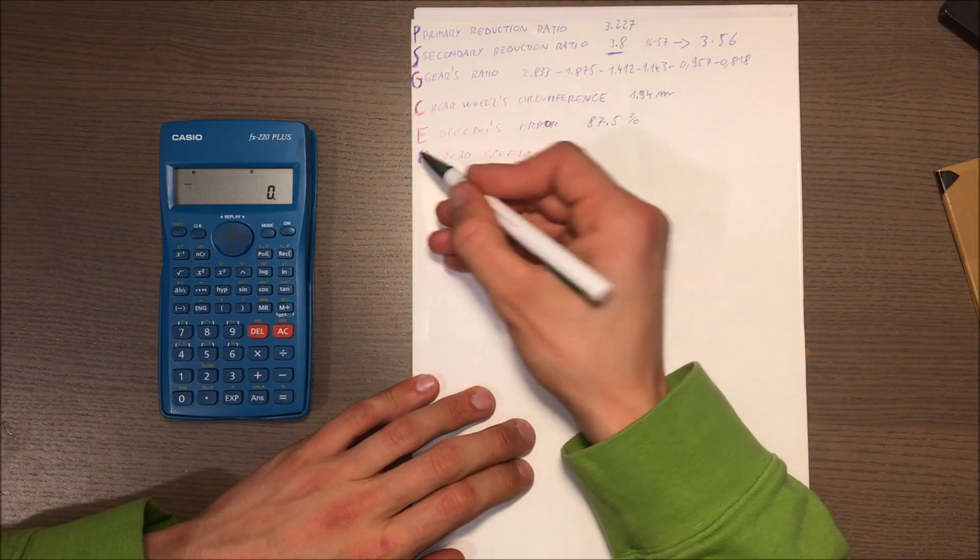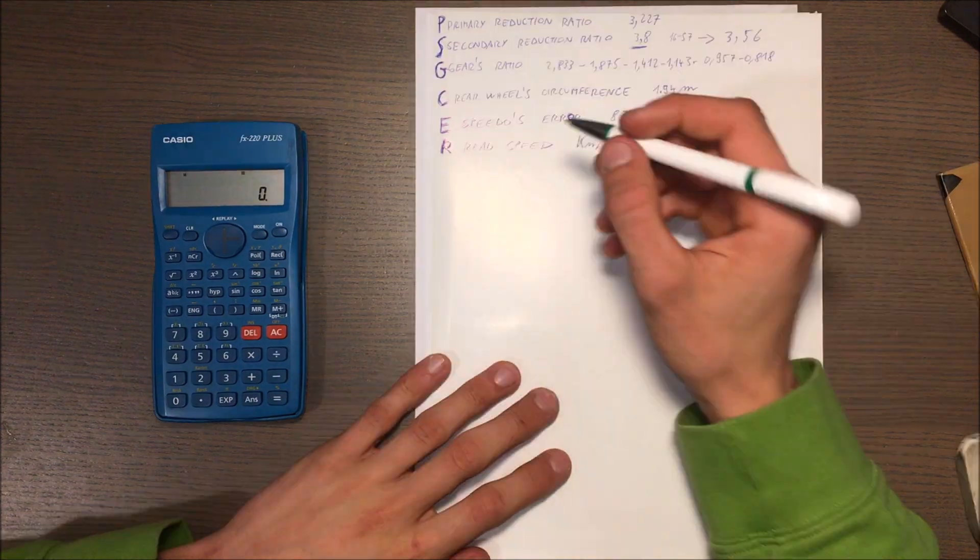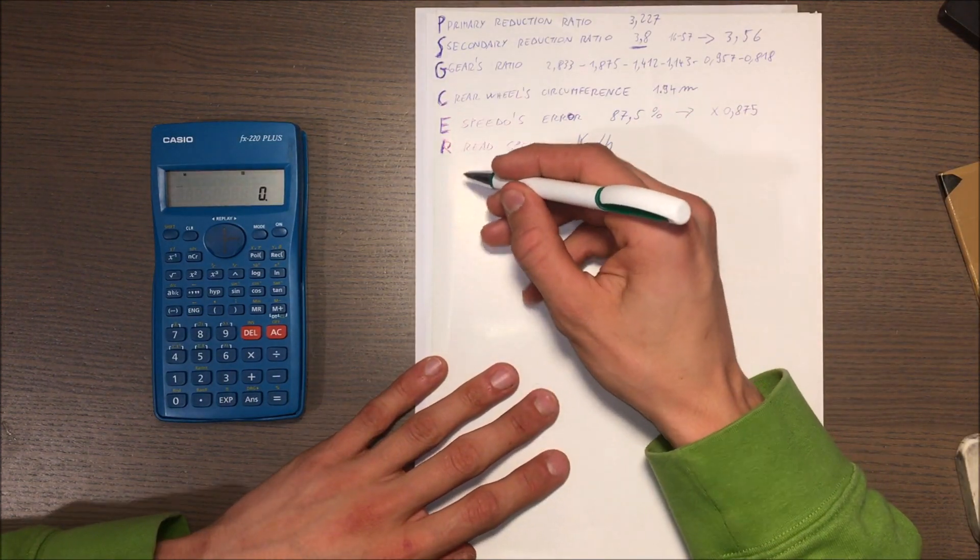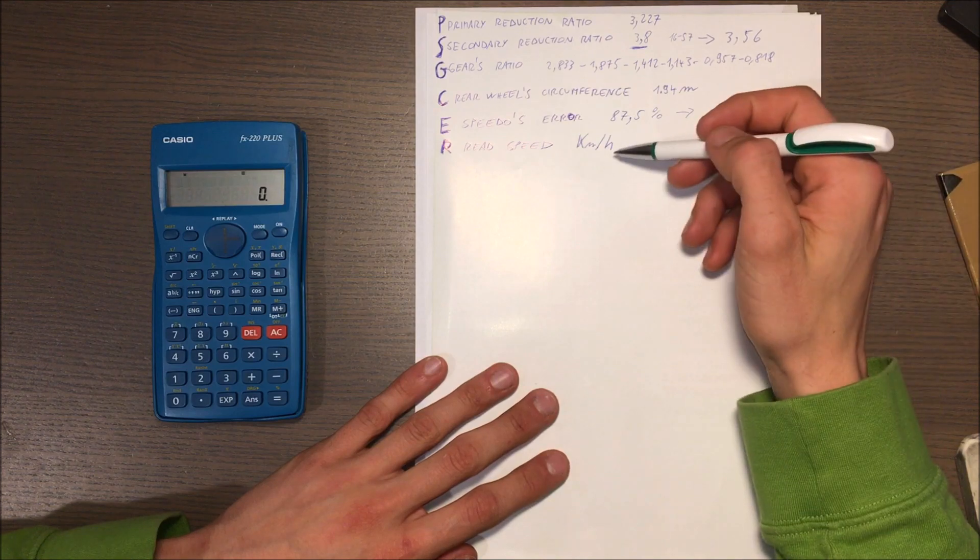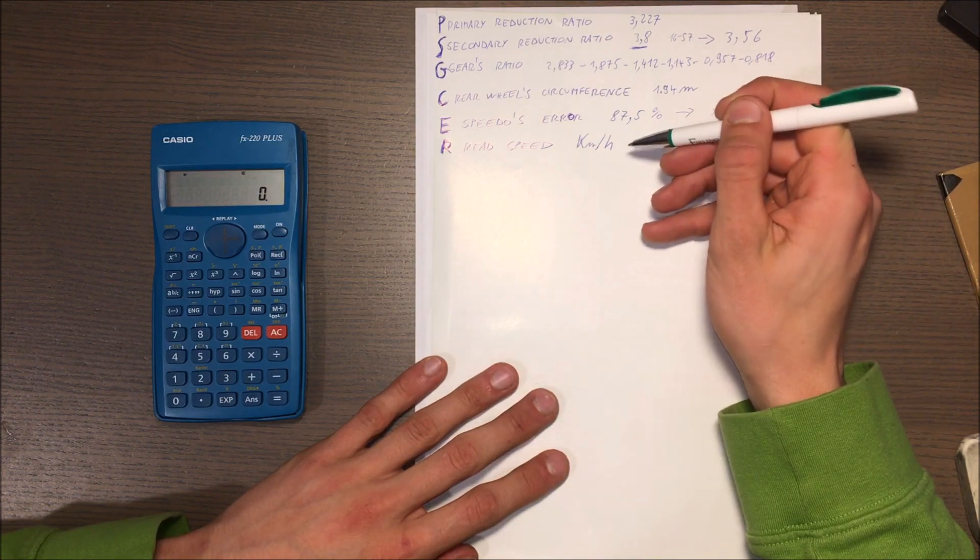Then we've got R, which is the speed that we read on our speedo. So another thing you need to know is how to convert your kilometers per hour in meters per minute.